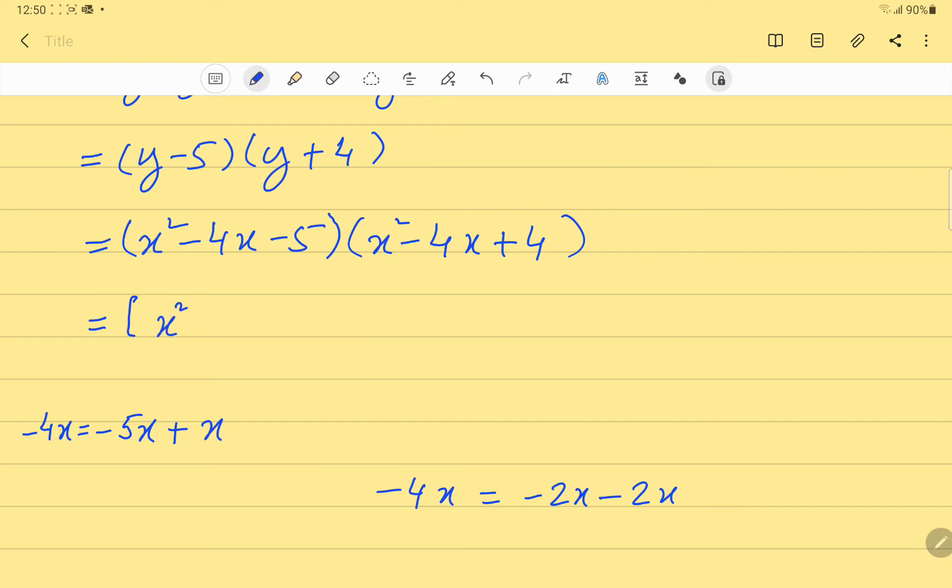So let's go back and factorize the two quadratic expressions. x squared, instead of minus 4x we will write minus 5x plus x, then come to the second one, instead of minus 4x we will write minus 2x and minus 2x.